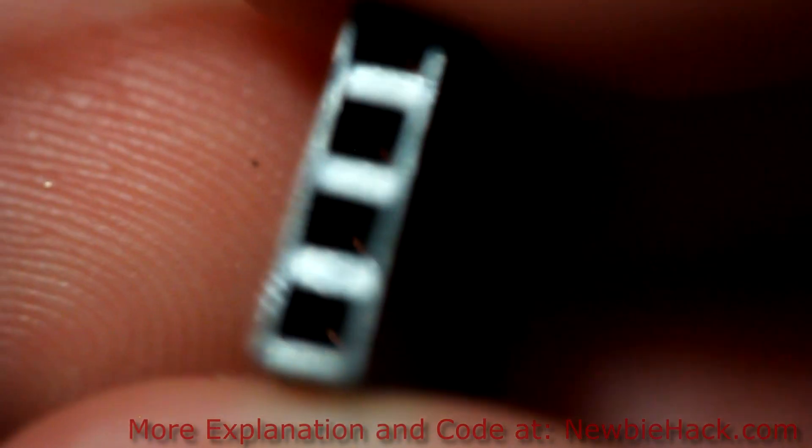Now we're going to insert these crimp pins into the female header. And if you look at it, there's an end with large openings and an end with small openings. You're going to be using the end with large openings.